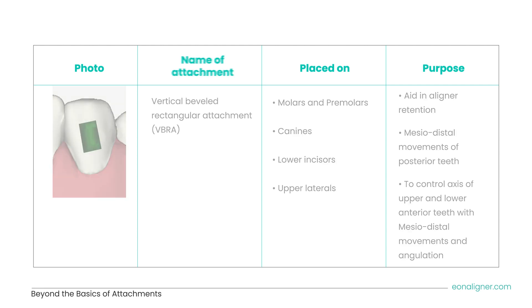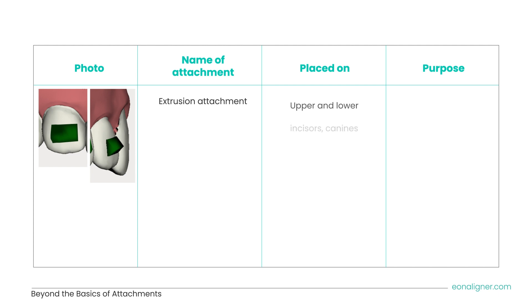Moving forward to the extrusion attachment. The graphic shows its shape from a frontal and side view. The gingival slope provides a surface for the aligner to apply forces for absolute extrusion. This attachment can be placed on upper and/or lower incisors and canines. Extrusion attachment is a necessity whenever anterior teeth extrusion is planned. It can also be used to control the torque of anterior teeth, especially when significant labial translation is planned in cases of crossbite.